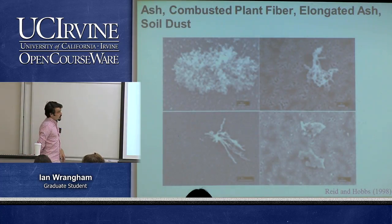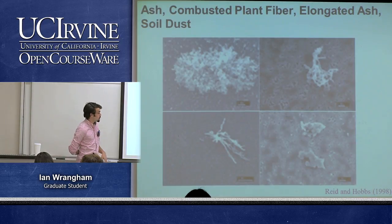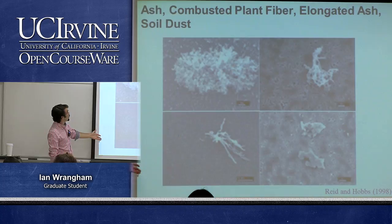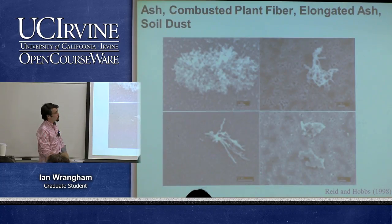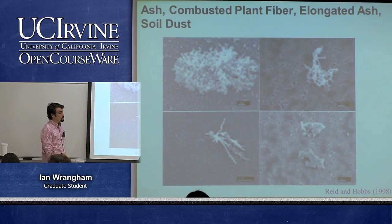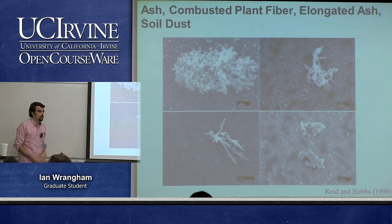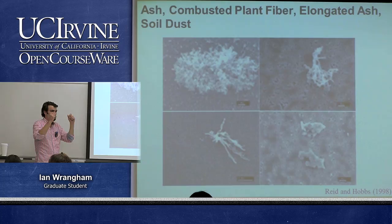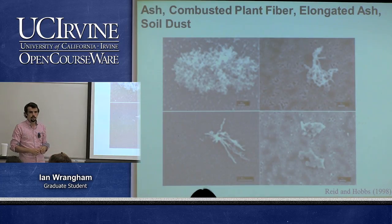Examples of particulate matter in the atmosphere include ash, combusted plant fiber, elongated ash, and soil dust. Sources are extremely varied — pollen, sea spray, rubber particles from tires on asphalt, and many more. There are so many different places they can come from.